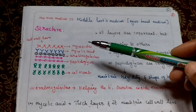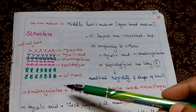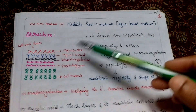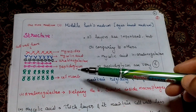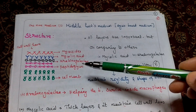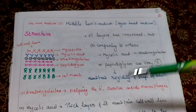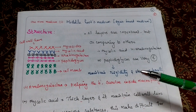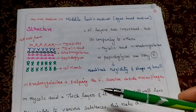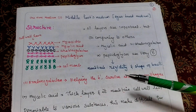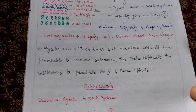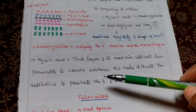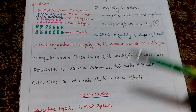The structure of Mycobacterium tuberculosis: the cell wall of this bacterium contains a cell membrane, peptidoglycan, arabinogalactan, mycolic acid, and mycosides. All layers are important, but comparing to others, mycolic acid, arabinogalactan, and peptidoglycan are most important. Peptidoglycan maintains the rigidity and shape of the bacilli. Arabinogalactan helps the bacterium survive inside macrophages. Mycolic acid is a thick layer that maintains low cell wall permeability to various substances, making it difficult for antibiotics to penetrate the bacterium.